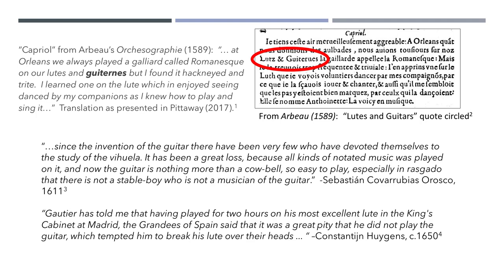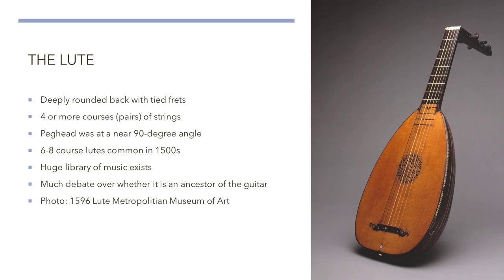Let's start at the beginning and look at an instrument that is frequently associated with the guitar, at least in popular culture, and that would be the lute. The lute is a stringed instrument characterized by having a fairly short neck, a high angled peghead, a teardrop shaped body, and an arched back consisting of multiple ribs. The strings on the lute were typically tied in pairs, which were known as courses.